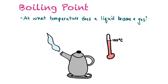Boiling point asks at what temperature a liquid becomes a gas or a gas becomes a liquid. For water, that temperature is 100 degrees Celsius. At that point, the particles are moving so fast they go from liquid into gas form — they are so far apart that they break away from the attraction of the liquid.